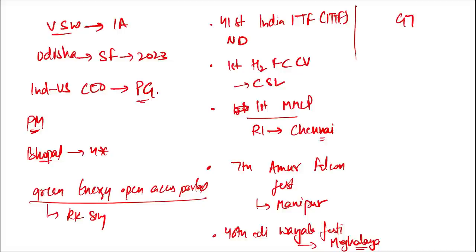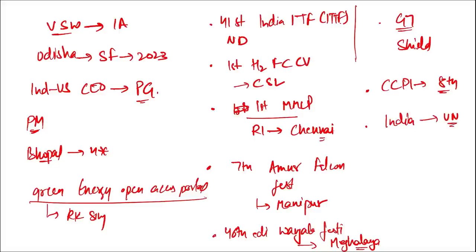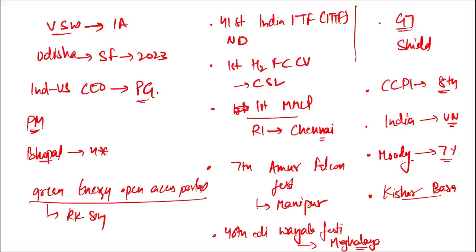G7 nations recently launched the Shield Fund for climate. India is ranked eighth in the Climate Change Performance Index. India will become the world's most populous country by 2023, as per a United Nations report. Moody's slashed India's GDP growth rate from 7.7% to 7%. Kishore Basa has been appointed as the chairperson of the National Monuments Authority.